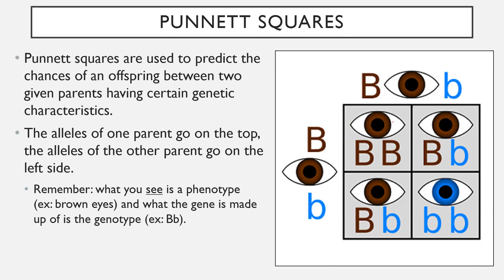As you can see in this picture here, they've drawn a Punnett Square, which is basically just a square with four different sections in it. Along the top, they have one parent — we can say this is the mom — and on the side is the dad. Now remember, what you see is a phenotype. I always remembered it by saying phenotype begins with 'ph,' another word that begins with 'ph' is photo — you see a photo — so phenotype is what you see. And what the gene is made up of is called the genotype — the actual alleles that make up that gene.